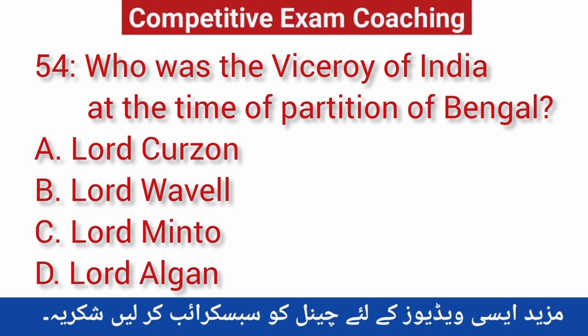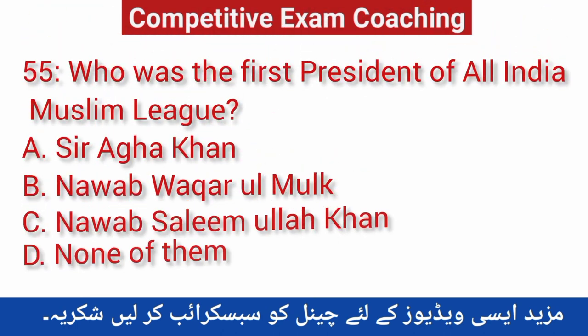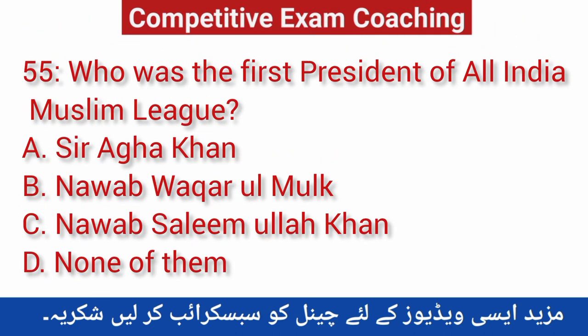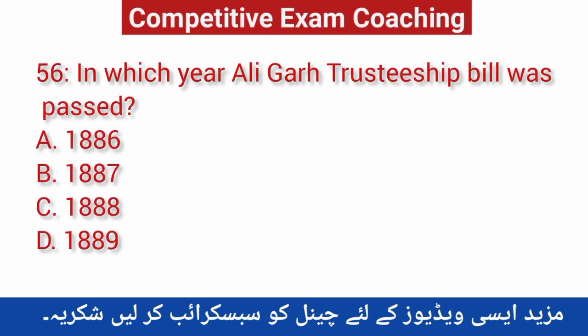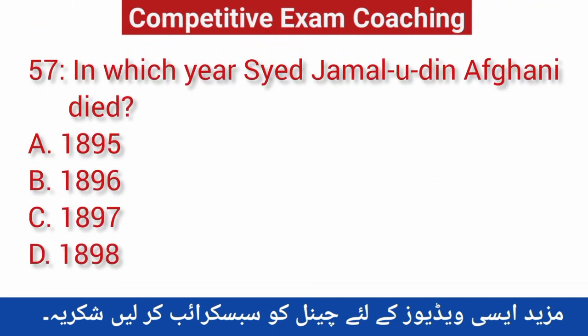Question number fifty-four: Who was the Viceroy of India at the time of the partition of Bengal? Correct answer is A — Lord Curzon. Question number fifty-five: Who was the first president of the All India Muslim League? Correct answer is A — Sir Agha Khan. Question number fifty-six: In which year was a legal trust built? Correct answer is D — 1889. Question number fifty-seven: In which year did Sayyid Jamaluddin Afghani die? Correct answer is C — 1897.